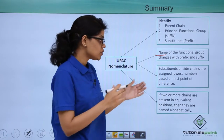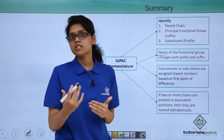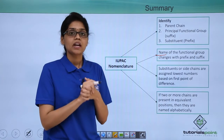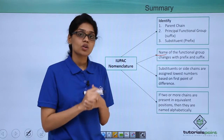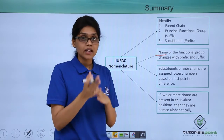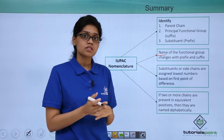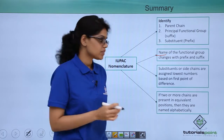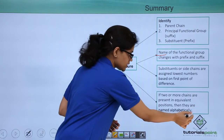We have also seen that if you have two or more chains in equivalent positions, or whenever there is a tie between the positions, in that case preference is given alphabetically.